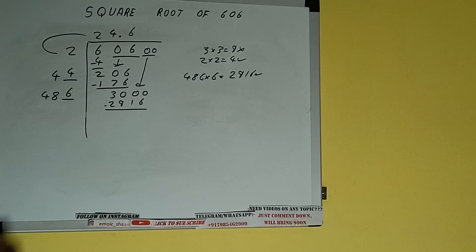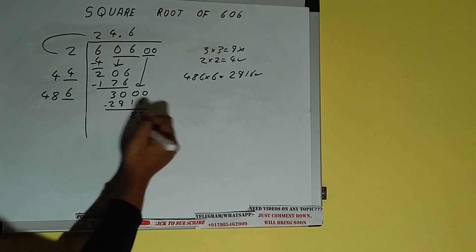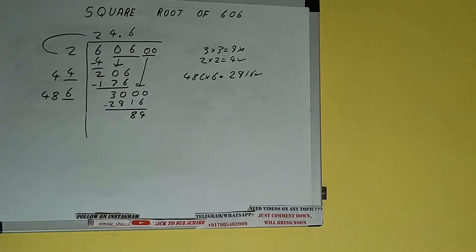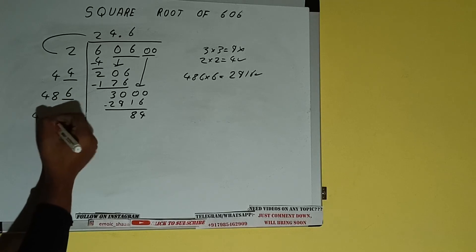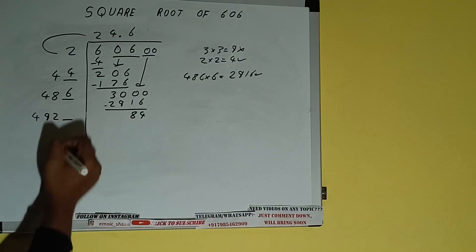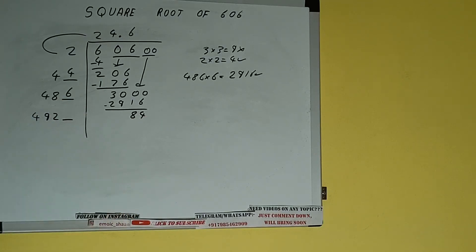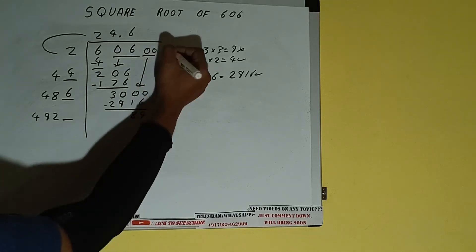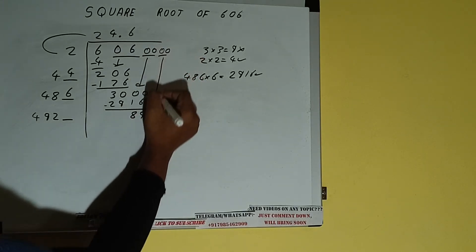We'll be left with 84. Now 486 into 6, so add both. 486 plus 6 will be 492 and one digit extra. This number we need to make it big, so bring the next pair of zeros down and it will be 8400.